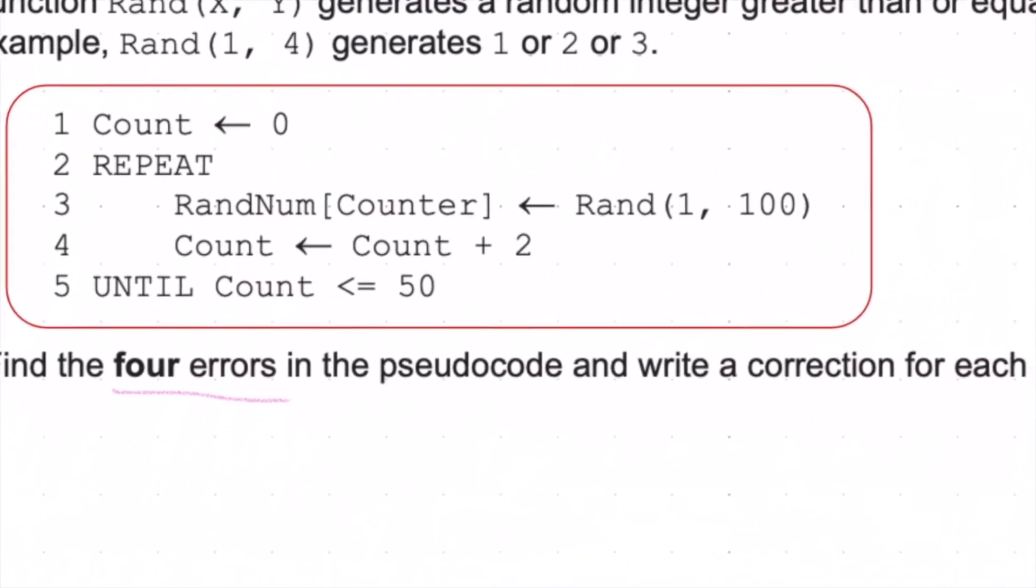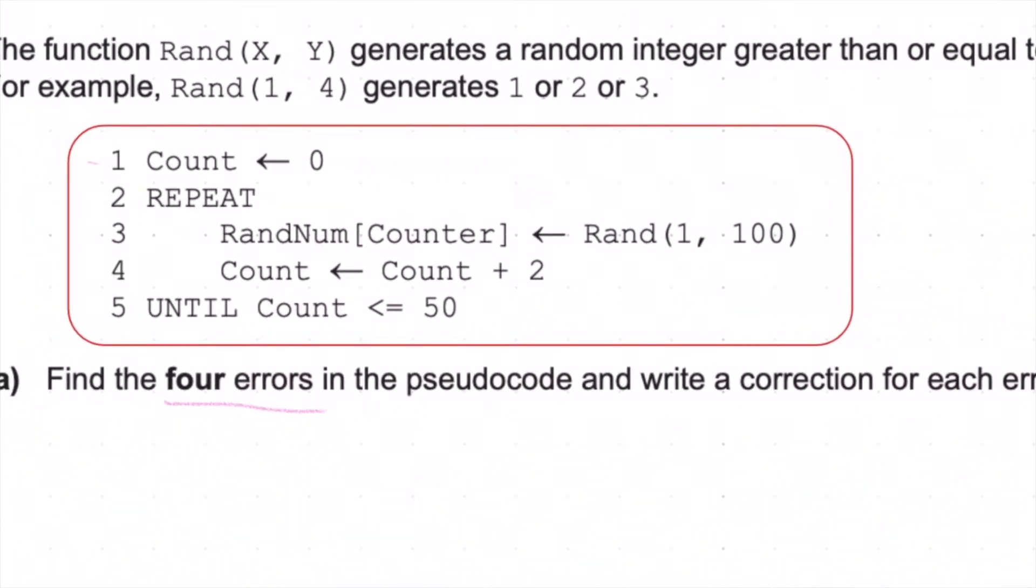Let's zoom in so we can see what's happening here. First of all, we're going to assign the value 0 to count. Then we're going to use a repeating program, repeat until the count is less than or equal to 50. We're going to repeat random number in the array counter. We're going to put in the values using the random generator 1 comma 100. So any number between 1 and 100, not including 100. We're going to count up in 2s looking at this. So count plus 2 has been assigned to count. And then until count is less than or equal to 50. So four errors in this code.